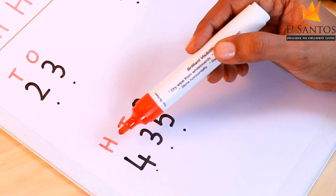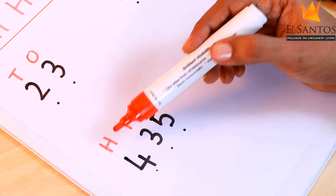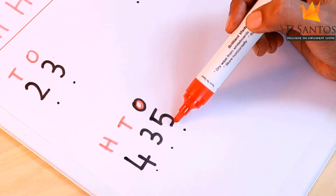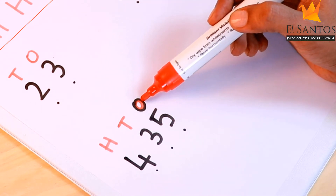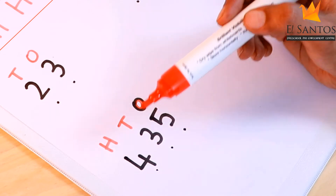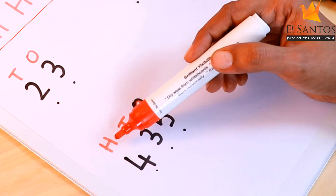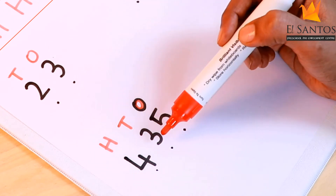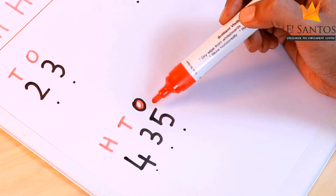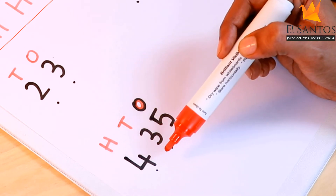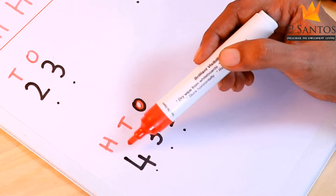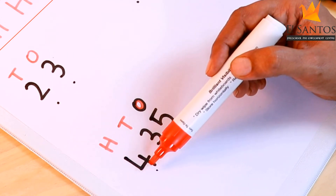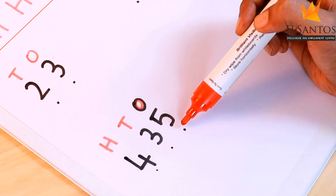Now let's read the number: four hundreds, three tens, five ones. Four hundreds, three tens are thirty, and five ones. So we will read it as four hundred and thirty-five.